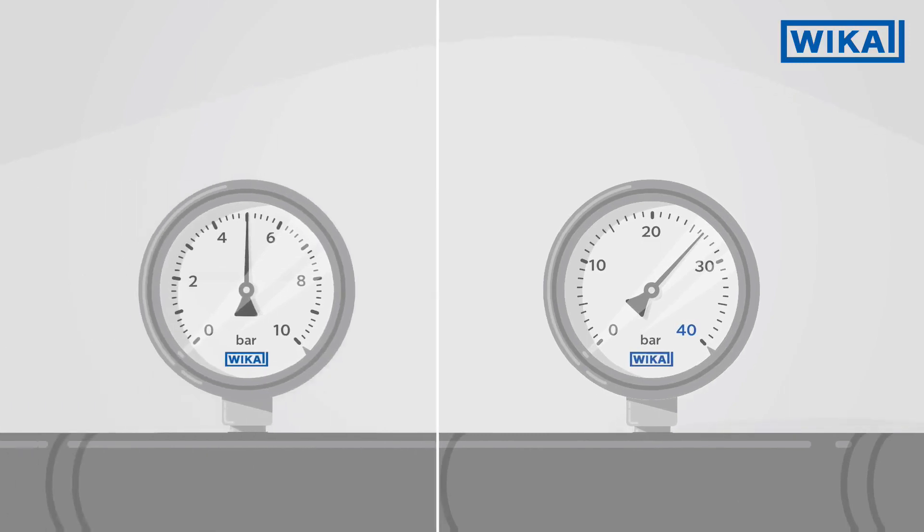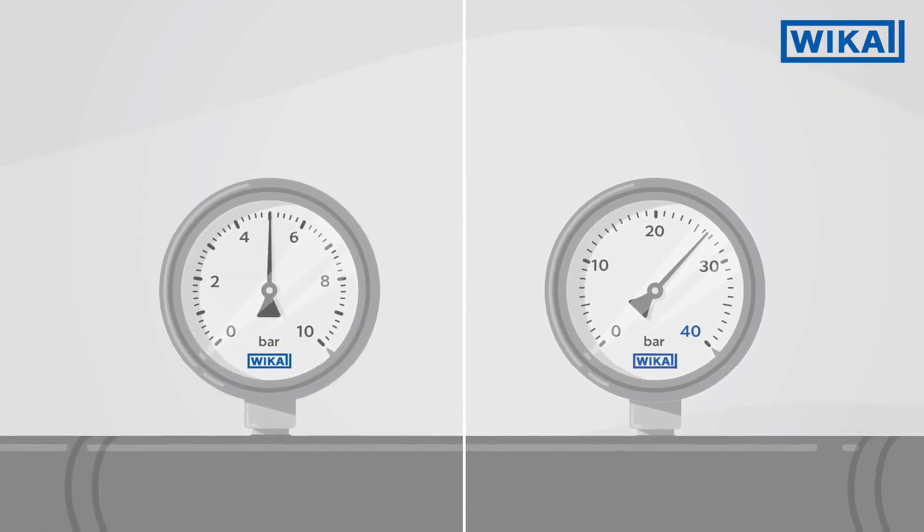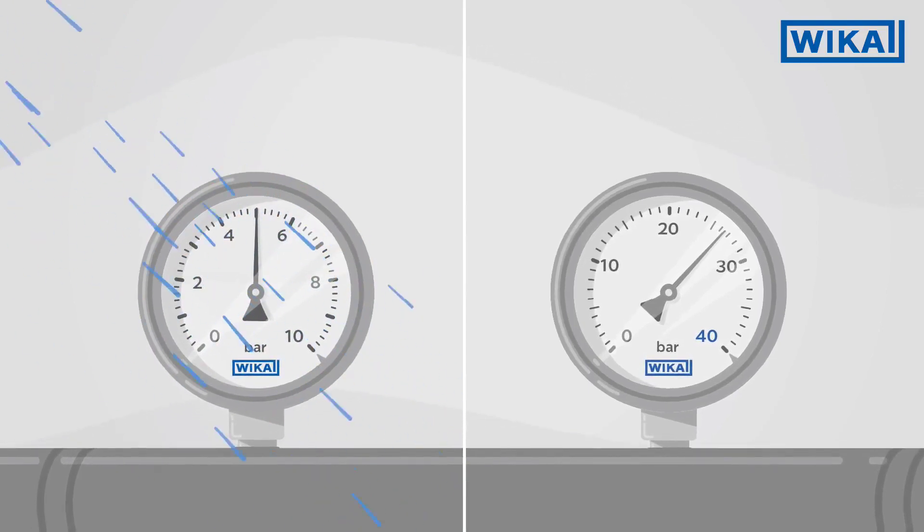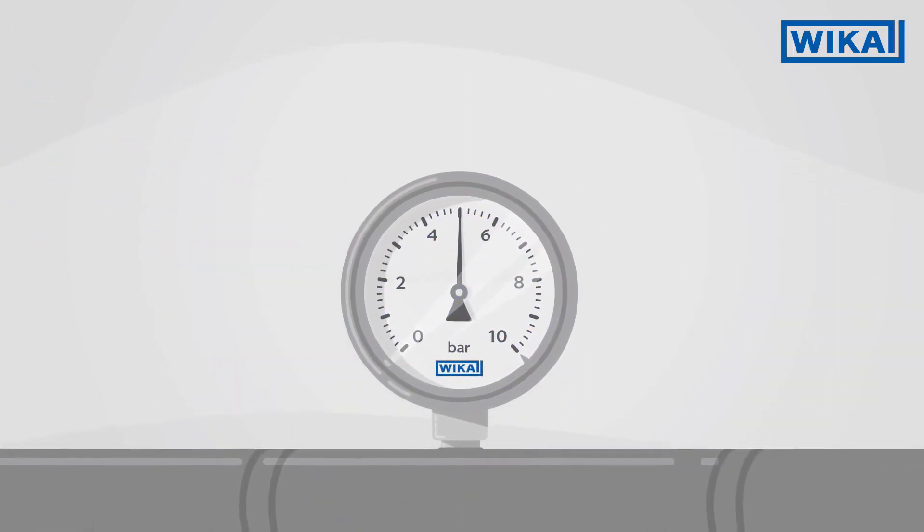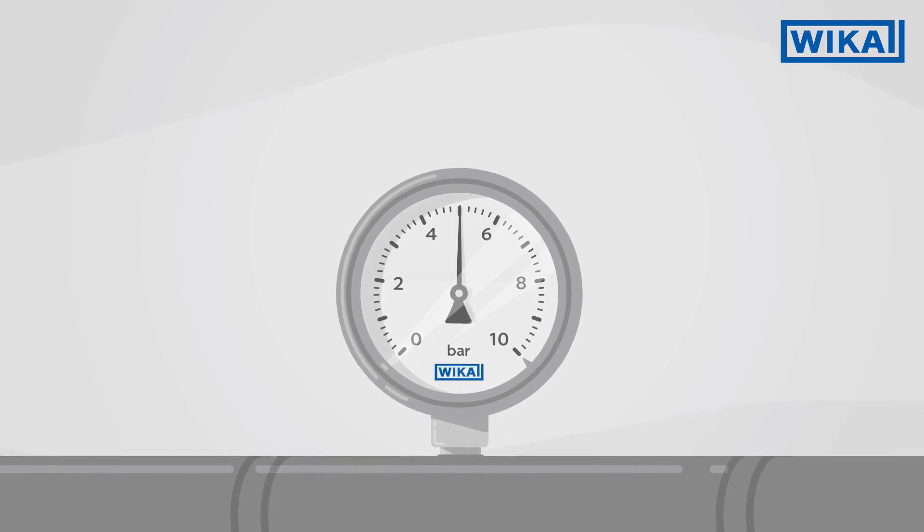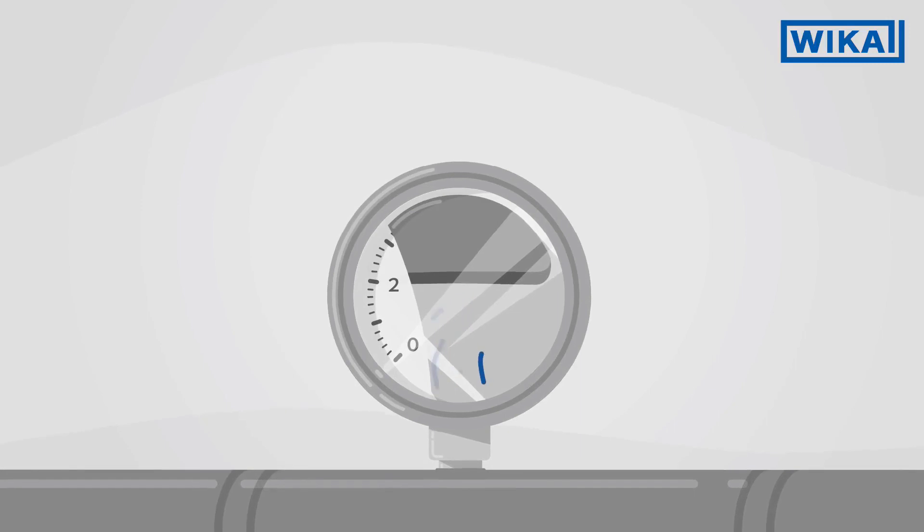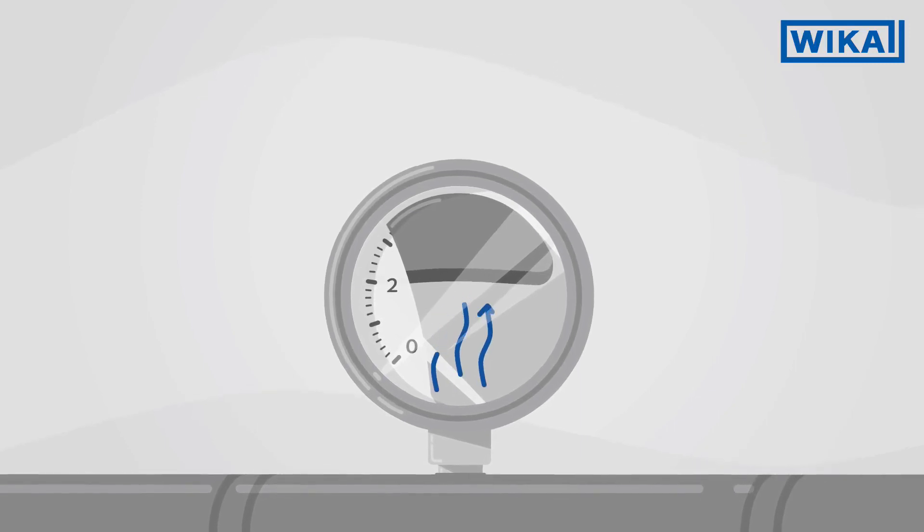It is also not needed if the instrument must be hermetically sealed, for example, to prevent the ingress of water into the case. If the pressure range is, in this case, less than 16 bar, the required compensation is achieved via a pressure compensation diaphragm on the inside of the rear wall of the case.